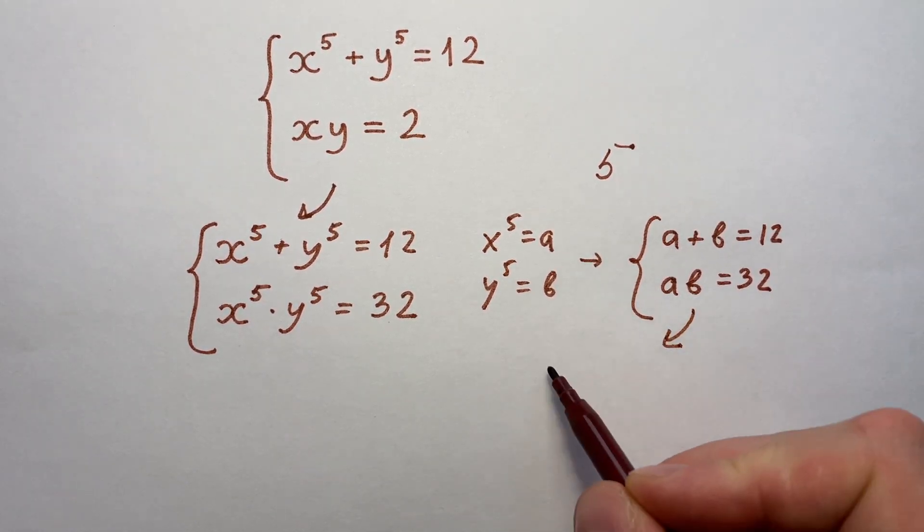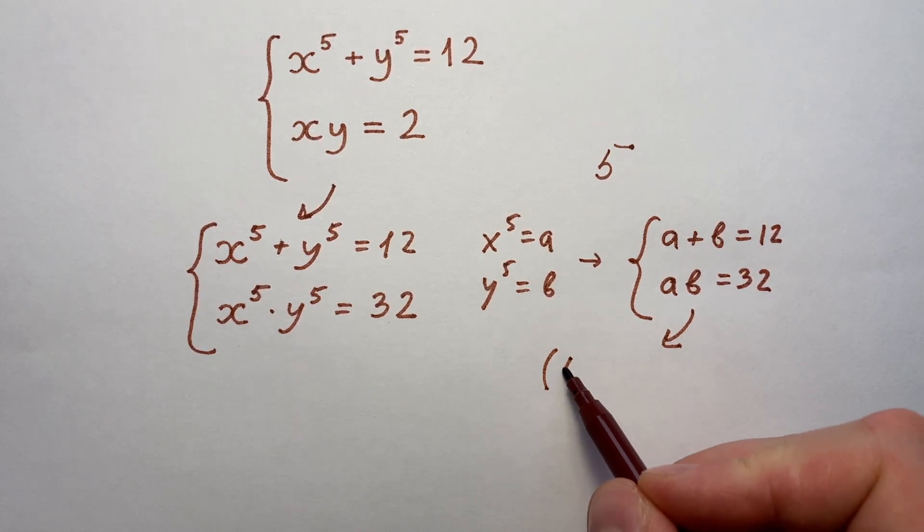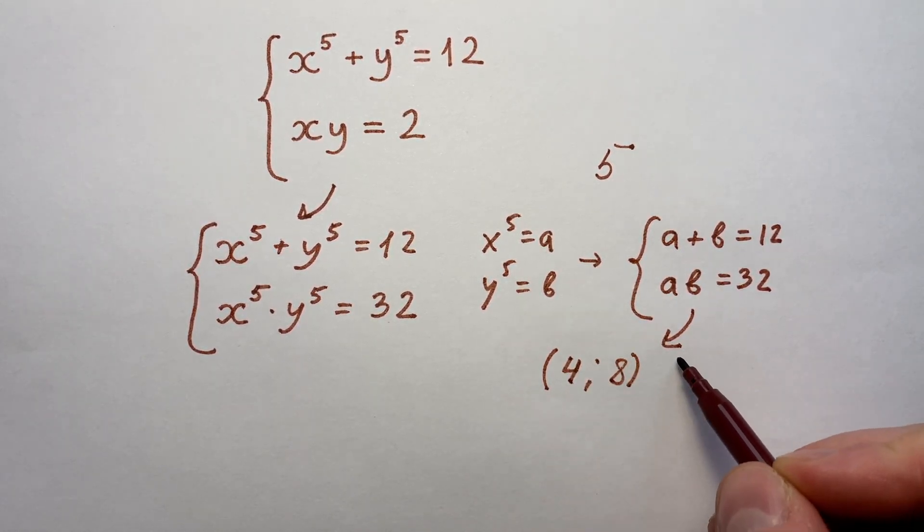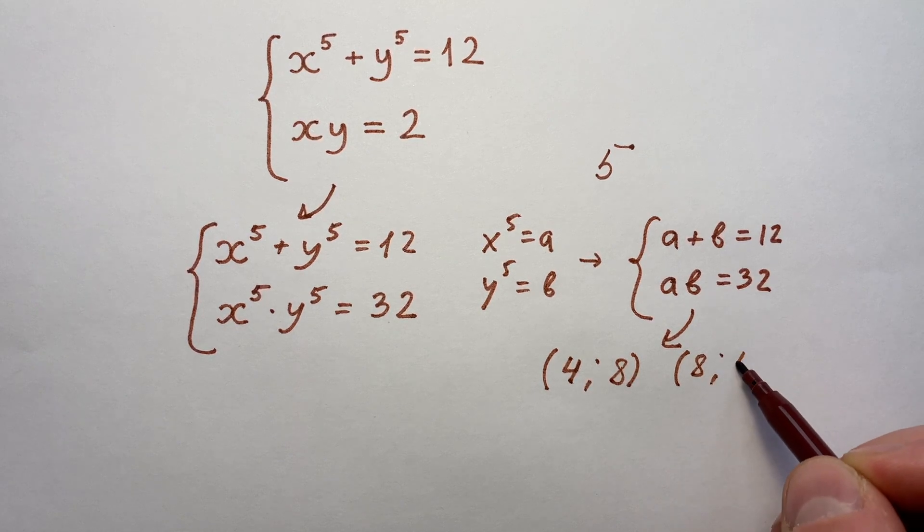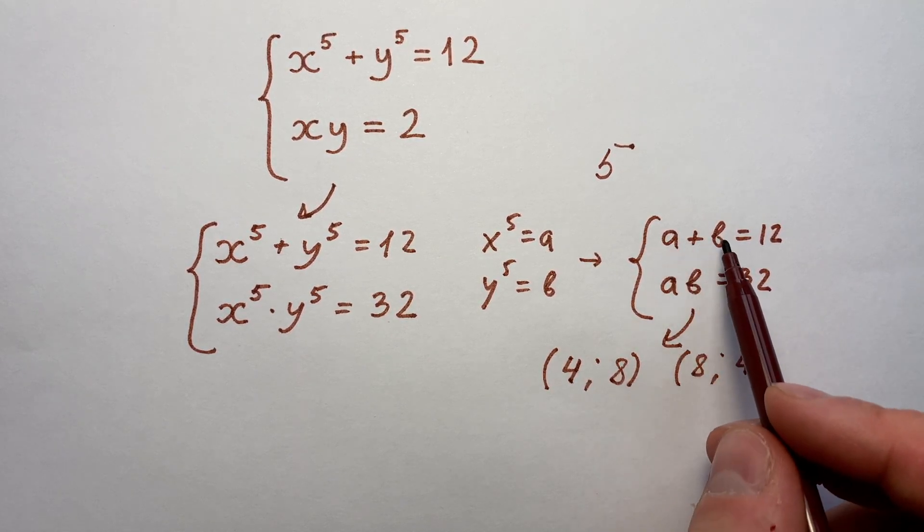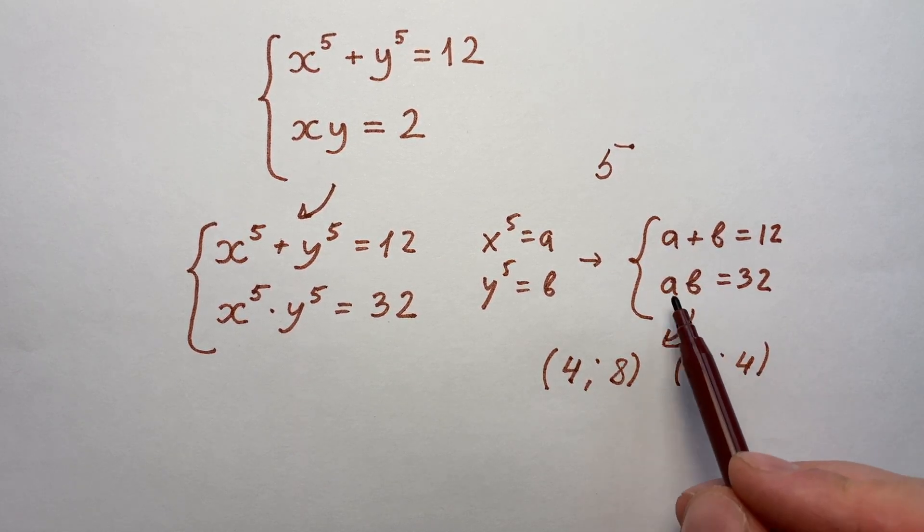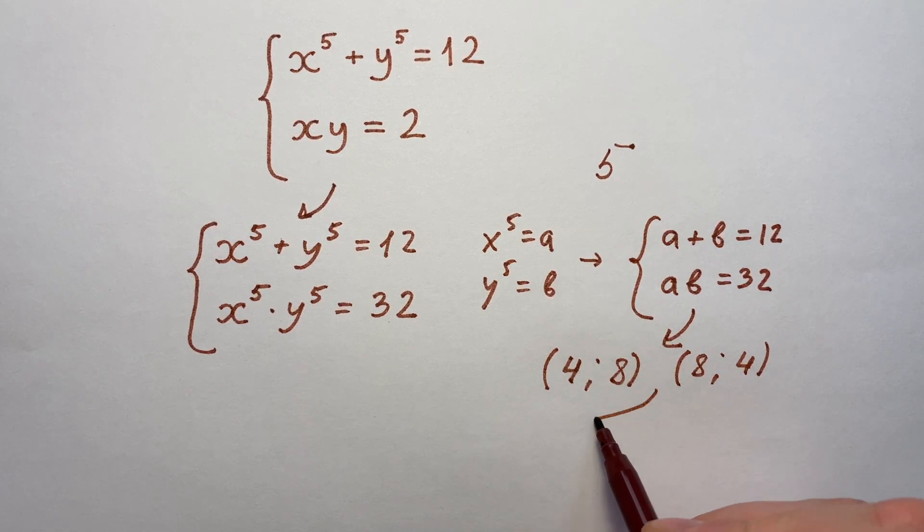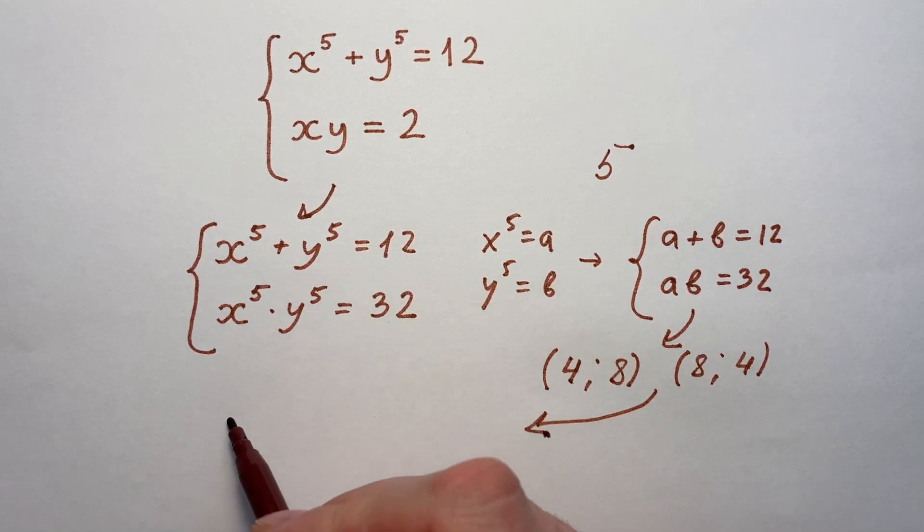There are two pairs of solutions: a equals 4, b equals 8, and a equals 8, b equals 4. Because it's a symmetrical system, a and b are symmetrical here. And from these two pairs we can finally get two cases.